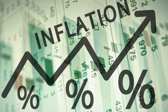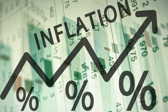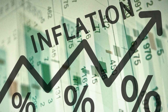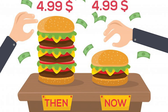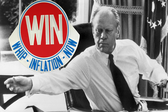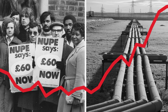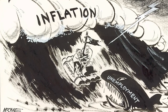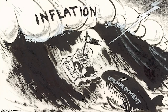Today, much of the world is facing very high levels of inflation, with rising prices and stagnant wages, meaning people are able to buy much less and must reduce their spending in order to afford essential goods and services. In the 1970s, the situation around the world was very similar, and in the United Kingdom it was especially bad, with both high unemployment and high inflation, in a combination known as stagflation.